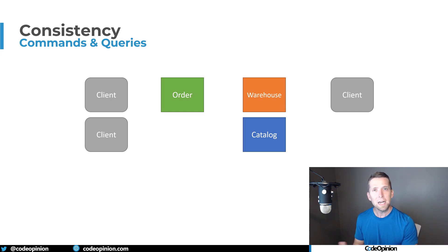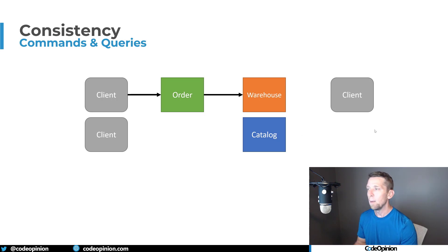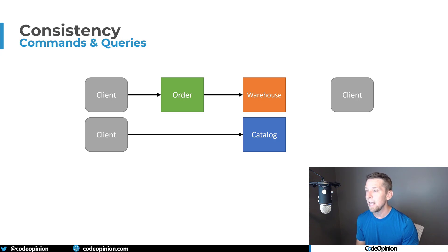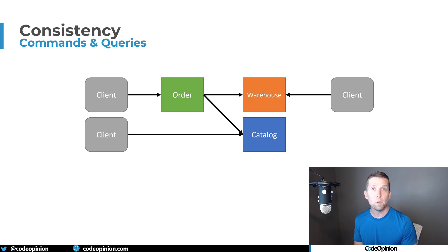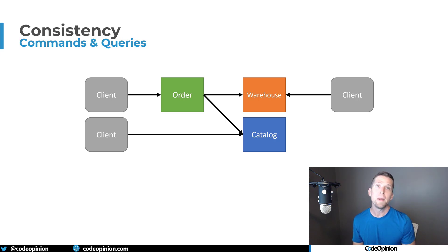What that code is not considering is that we have different clients or different users interacting with our system concurrently at the same time in a collaborative environment. We could have one client creating an order and going to the warehouse, while at the same time a completely different client is interacting with the catalog — maybe changing the description, updating images, or updating product names. And another client may be interacting with the warehouse to do an inventory adjustment. When writing code like this, we often don't think about the fact that the data we're selecting will be immediately inconsistent the moment we fetch it as part of saving our order.